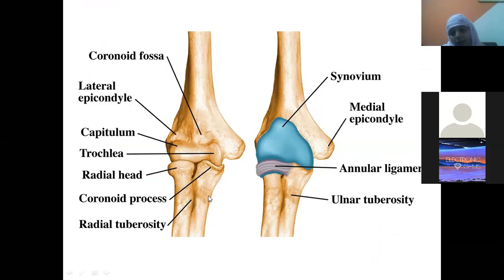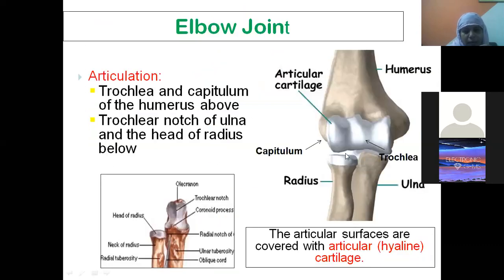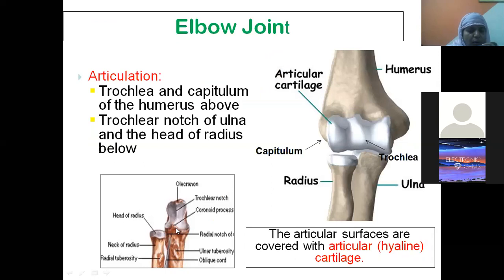To hold the head of the radius in position, we have the annular ligament. The bones forming the elbow joint are the lower end of the humerus, upper end of the ulna, and radius. The trochlea and capitulum of the humerus articulate above; the trochlear notch of the ulna and the head of the radius articulate below.